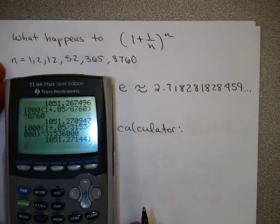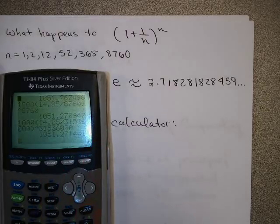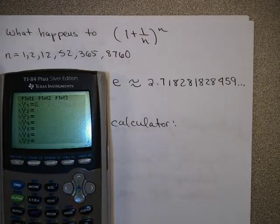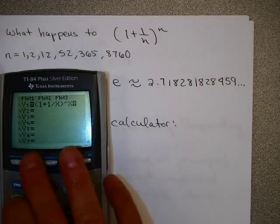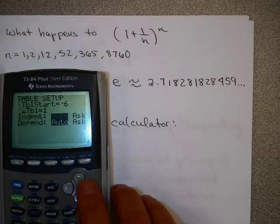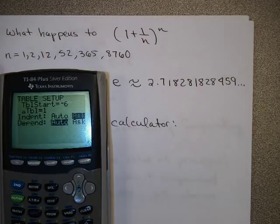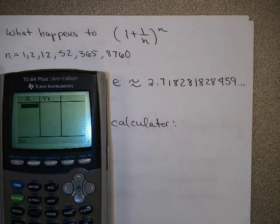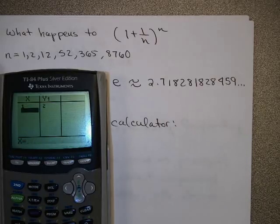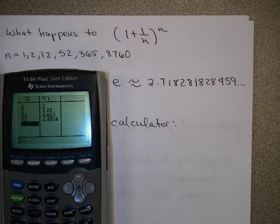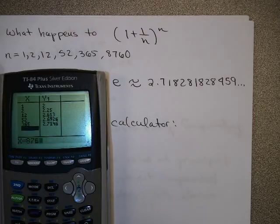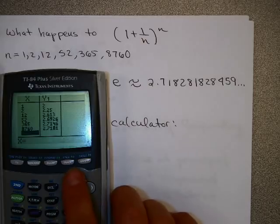Let me try this on my calculator. I'm going to go to y equals and put in (1 + 1/x)^x. I'm going to set up a table using ask for my independent variable. I'm going to put in one of these values. For 1, the answer is 2. For 2, the answer is 2.5. For 12, the answer is 2.613. For 52, 2.6926. For 365, 2.7146. For 8,760, 2.718.